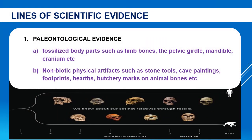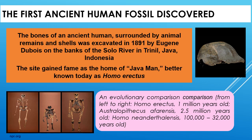The primary evidences on the basis of which we have reconstructed our story are in the form of paleontological evidence. It includes fossilized body parts such as limb bones, pelvic girdle, and cranium, as well as non-biotic physical artifacts used by our extinct ancestors. The first ancient human fossil was discovered in 1891 by Eugene Dubois on the banks of the Solo River in Java, Indonesia. This site later gained fame as the home of the Java Man, better known today as Homo erectus.